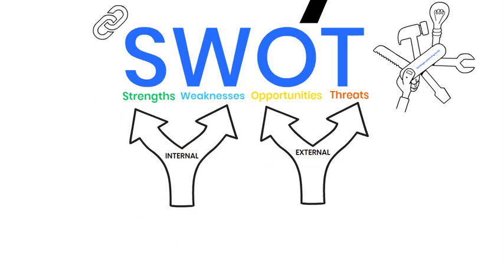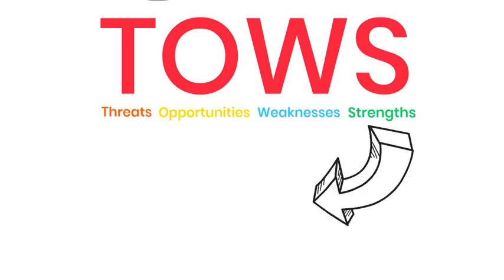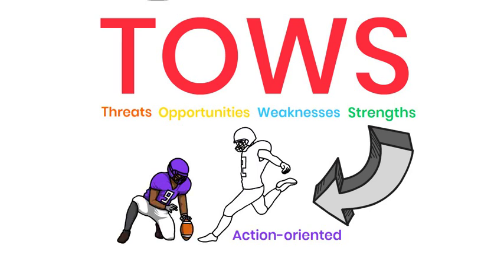TAILS analysis, on the other hand, is a tool that builds on the SWOT analysis by combining the internal and external factors to generate strategic options. TAILS stands for threats, opportunities, weaknesses and strengths. In a TAILS analysis, the external factors are identified first, followed by the internal factors. In essence, TAILS analysis is more action-orientated in its approach, building on the insights generated by the SWOT analysis to develop strategies and action plans. It emphasises the need for proactive responses to both internal and external factors, while the SWOT analysis is more focussed on identifying areas for improvement and potential risks.